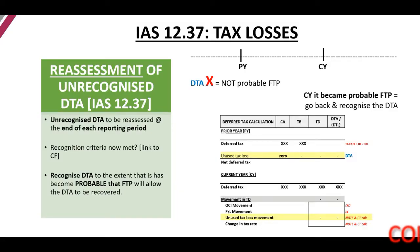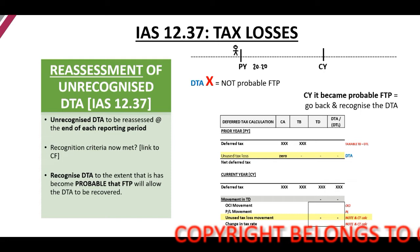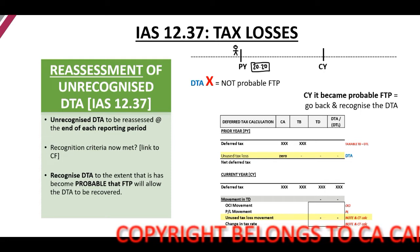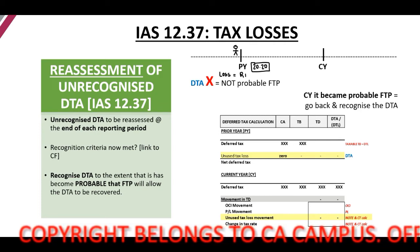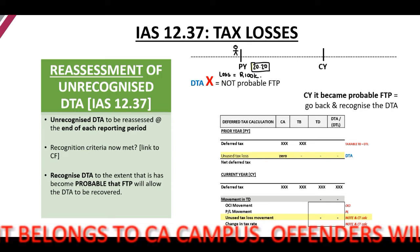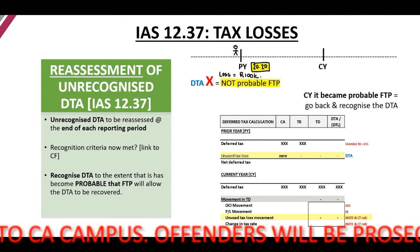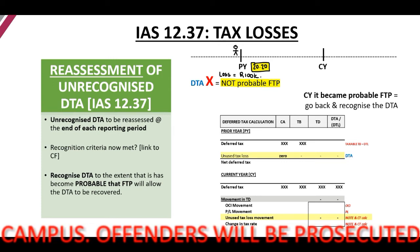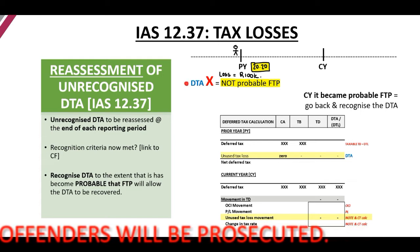Let's have a look at paragraph 37 again — focus on my timeline please. Let's say for example that we are standing on 31 December 2020. This year we have recognized a taxable loss of a hundred thousand. But on that date, on 31 December 2020, it is not probable that there will be future taxable profits, and there are no taxable temporary differences. Therefore we may not recognize a deferred tax asset.